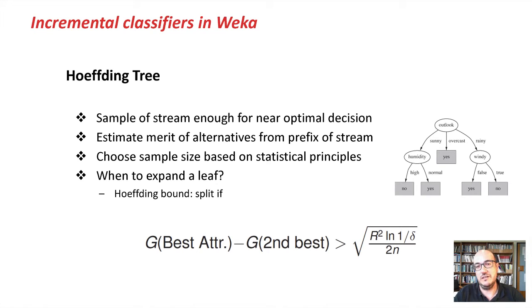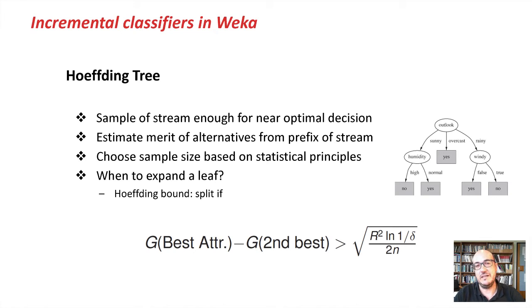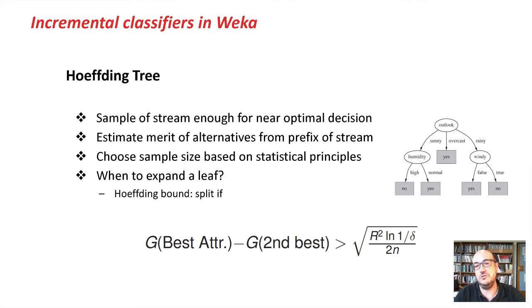In the incremental setting we don't store the data set in memory, so to decide whether to split we need to wait for new instances to arrive. How many instances do we need? This is computed using the Hoeffding bound, which is why the tree has this name. Another interesting property of the Hoeffding tree is that it has theoretical guarantees: if the number of instances used to build the model is large enough, the resulting decision tree will be similar to one built using the standard batch method.